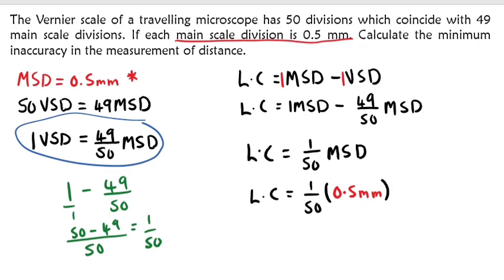If we multiply what we have here, the least count will be 0.01 millimeters. Hence, the minimum inaccuracy in the measurement of the distance is 0.01 millimeters. That's how it's found. Thank you very much, I hope it makes sense.